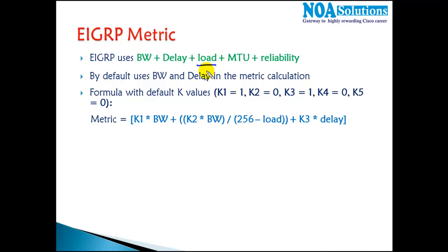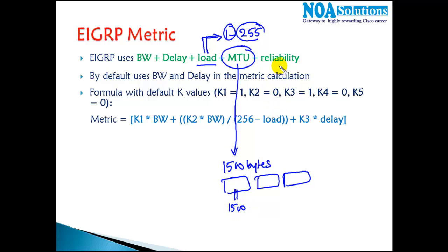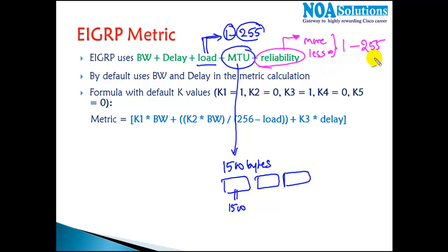Load represents the amount of traffic moving on a link. A value of 1 means less load, and 255 means more load — it depends on the traffic on that interface. MTU stands for Maximum Transmission Unit; the default MTU size is 1500 bytes per packet. Reliability is based on the link status and packet drop rate: 255 is most reliable (no drops), 1 is least reliable, and the default is 255.